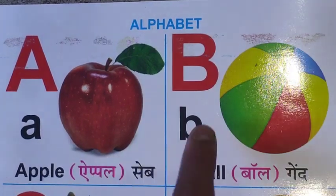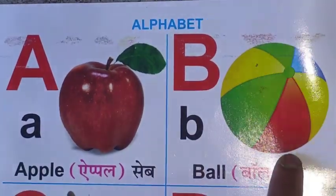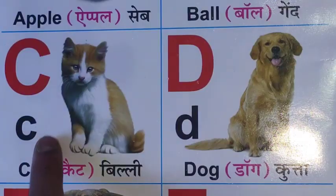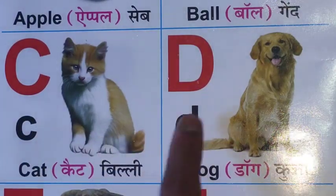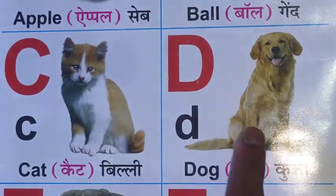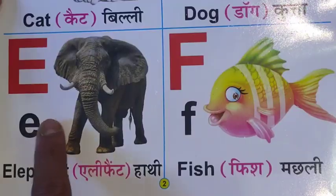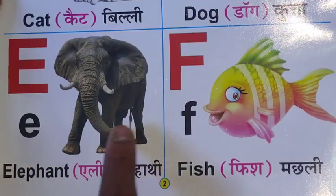A for Apple, B for Ball, C for Cat, D for Dog, E for Elephant.